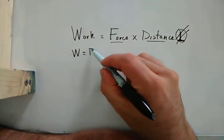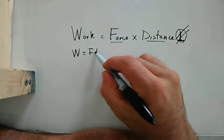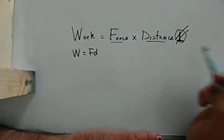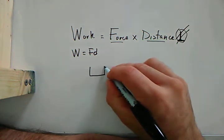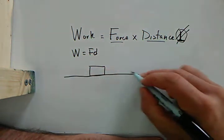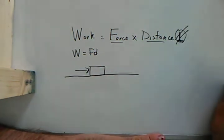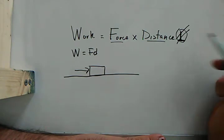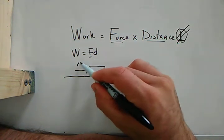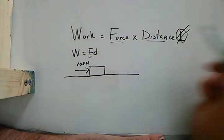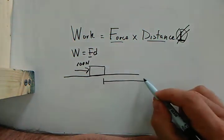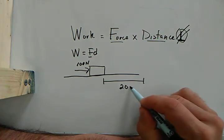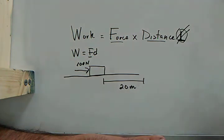Work is F times D. So let's give you an example of this. Let's say I push on this block and I apply a hundred newton force to the block. And let's say the block goes 20 meters.